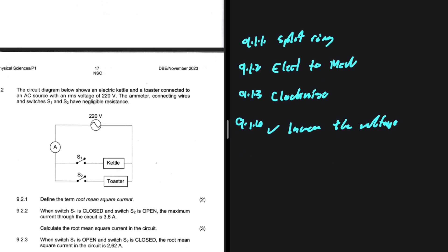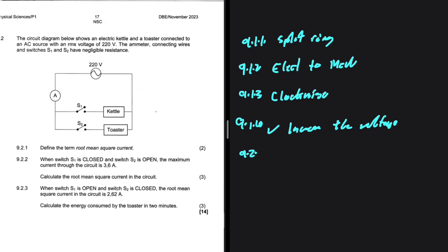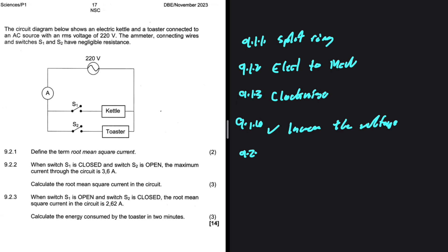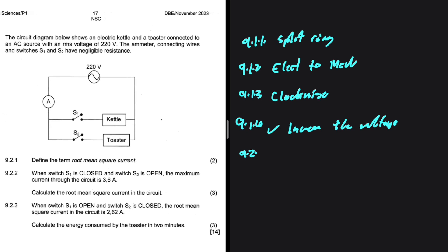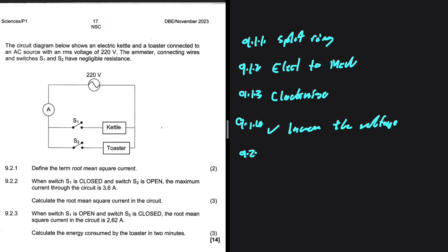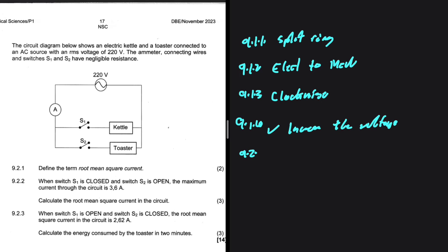Let's take a look at 9.2. VRMS, IRMS, so on and so on. The diagram below shows an electric kettle and a toaster connected to an AC source with an RMS voltage of 220 volts. The ammeter connecting wires and switches S1 and S2 have negligible resistance.